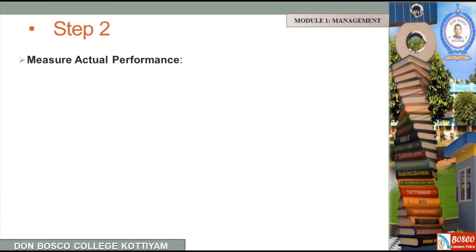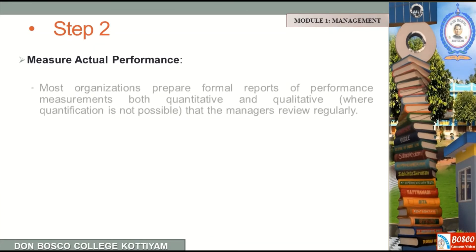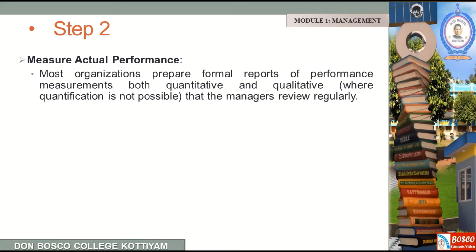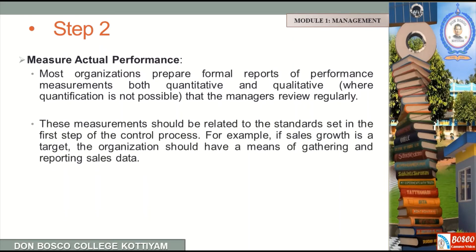The second step is measuring actual performance. Most organizations prepare formal reports of performance measurements, both quantitative and qualitative, and the manager reviews them regularly. The reporting system shows how the organization functions, and the manager reviews those reports to measure actual performance.